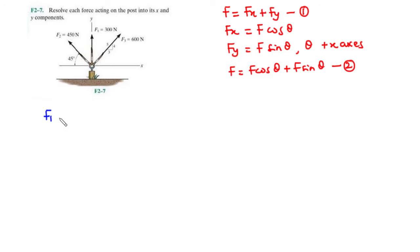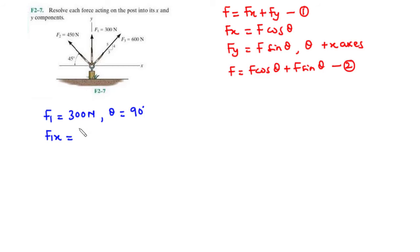For F1, the magnitude is 300 N. The angle formed between F1 and the positive x-axis is 90 degrees, since F1 is lying on the positive y-axis. Therefore, theta is 90 degrees. To find F1x: 300·cos(90°) = 300 × 0 = 0 N. So F1x equals 0 N.